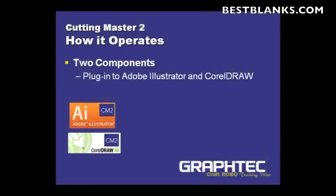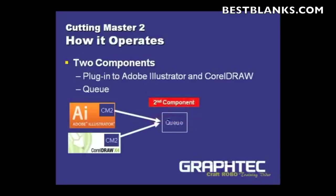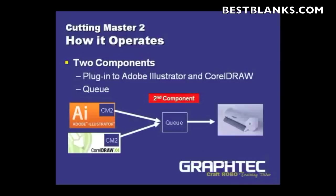It handles all the different details needed to make your output correct, then it sends everything to a queue — and that queue is the second component. The queue lines up all the jobs, and its basic function is to send the designs or files to your Craft Robo.